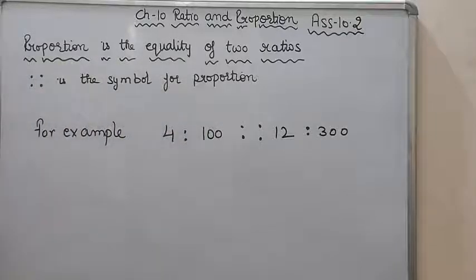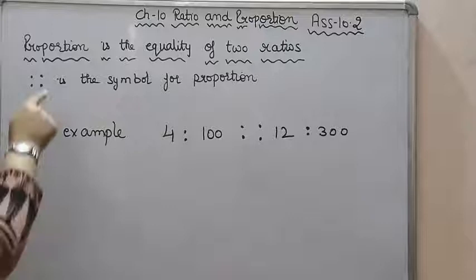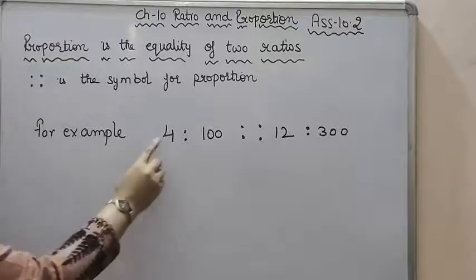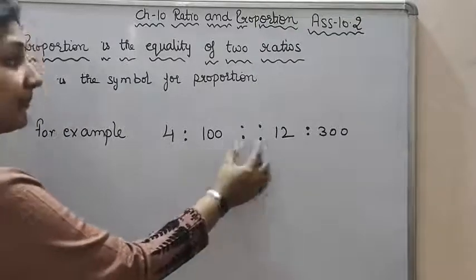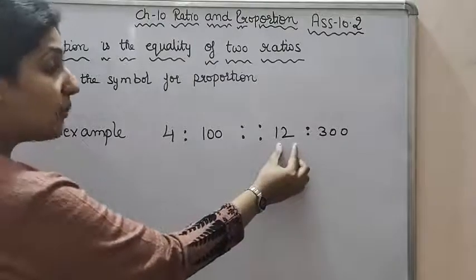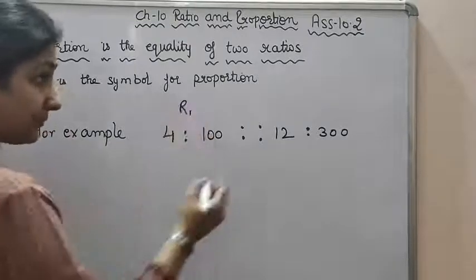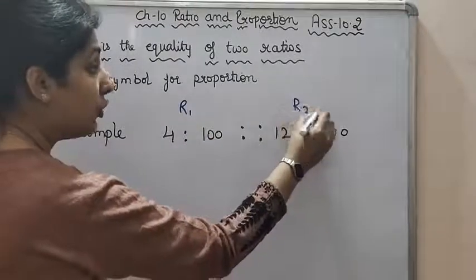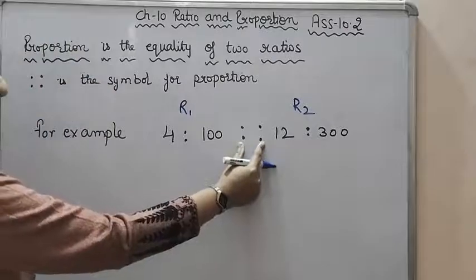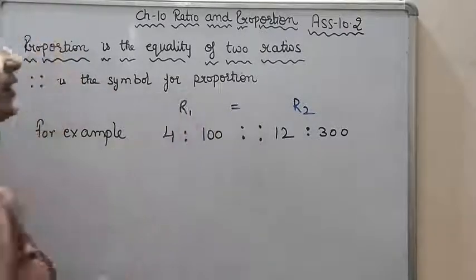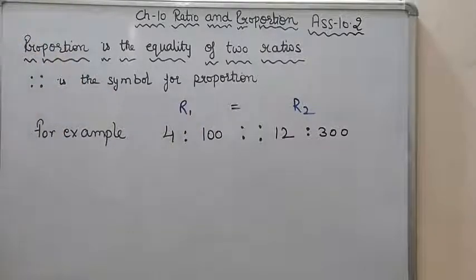And proportion ka sign kya hai? Four dots. How do we read this? As to. Two dots we read as is to. For example, four is to one hundred, as to twelve is to three hundred. This is ratio one, this is ratio two. Four dots, that is called as to. And if between these two there is an equality sign, that is also depicting a proportion.